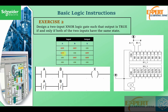Exercise two says: design a two-input XNOR gate such that the output is true if and only if both inputs have the same state. This is the truth table: when both inputs are zero-zero, the output is on; when they are both one-one, the output is on; when the two inputs have different states, the output is zero.